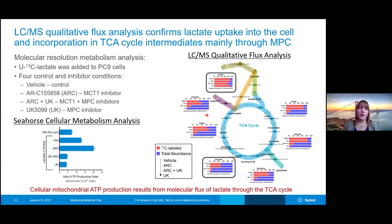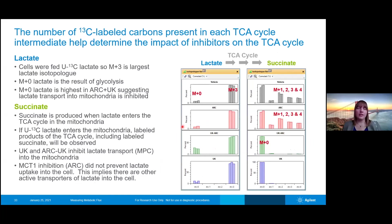The conclusion from this study is that the cellular mitochondrial ATP production is really resulting from molecular flux of lactate through the TCA cycle. We can take a deeper dive into what's happening to lactate and succinate in particular.